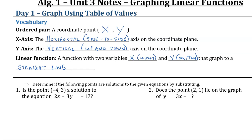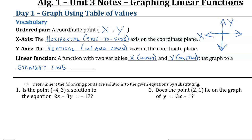First, an ordered pair is a coordinate point x comma y. The x value always comes first, y always last or second. The x-axis is the horizontal or side-to-side axis. The y-axis is the vertical or up-and-down axis. Positive values for x go to the right, negative values for x go to the left, just like a regular number line. For y, positive values go up and negative values go down.